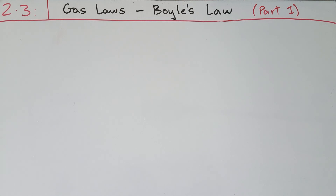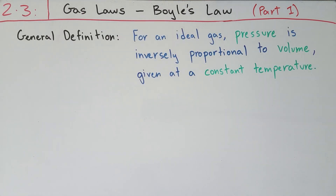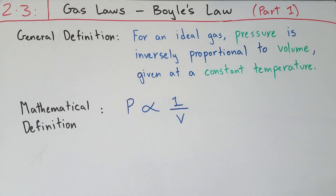We will see graphically how pressure is involved with the volume of a gas in Boyle's law at constant temperature. The general definition of Boyle's law is that for an ideal gas, the pressure of that gas is inversely proportional to the volume of the gas, under the condition of constant temperature.